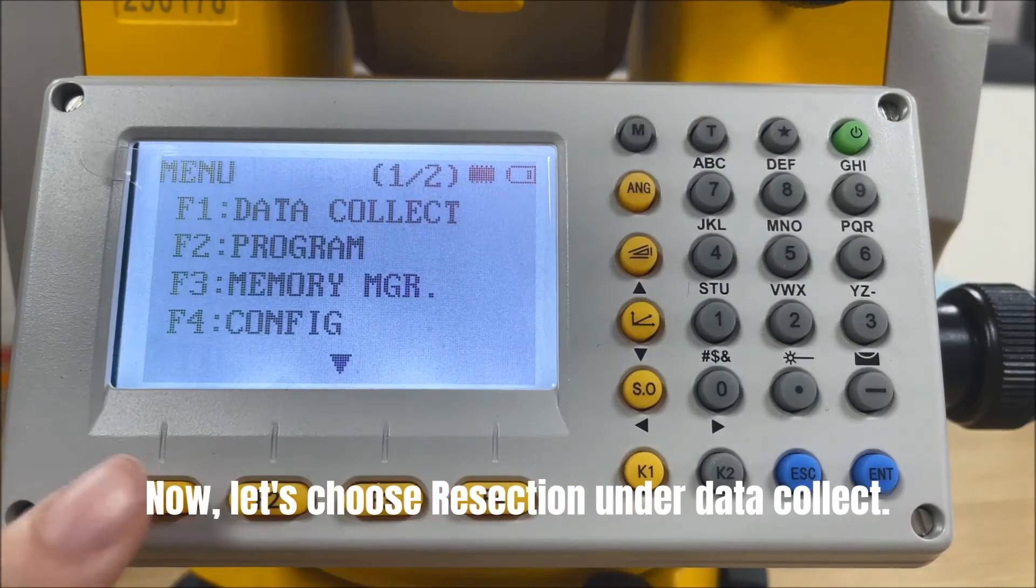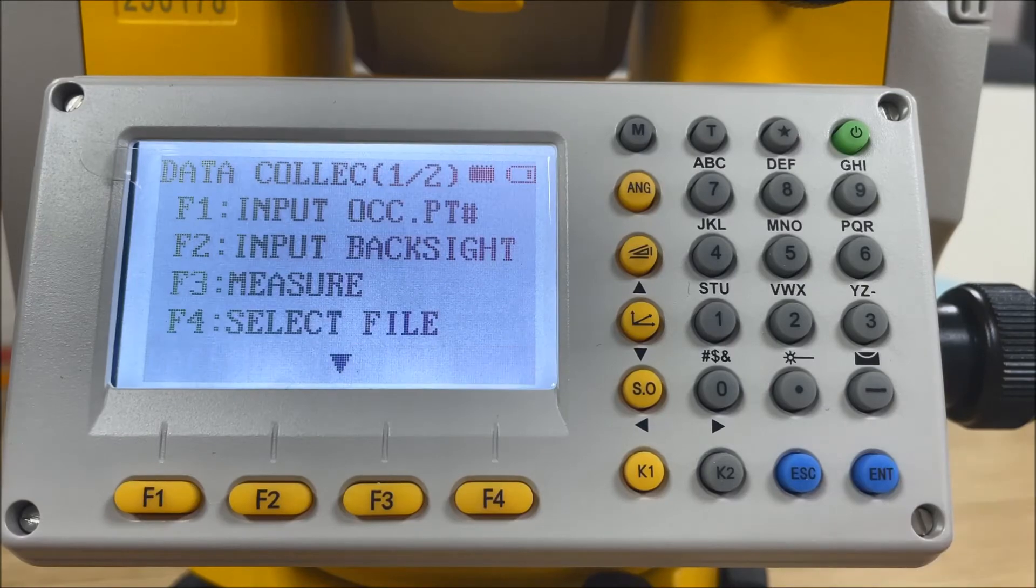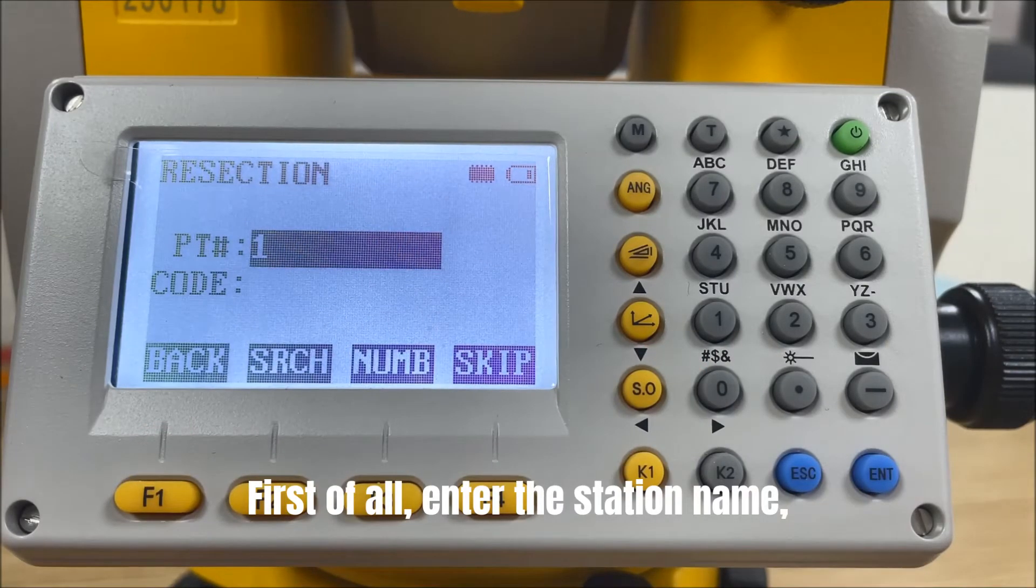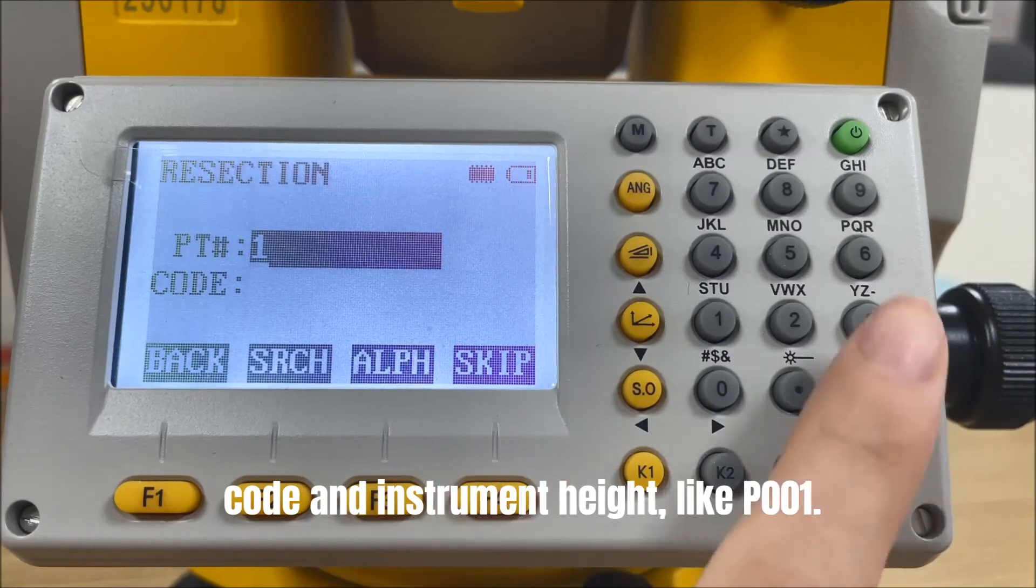Now, let's choose resection under data collect. First of all, enter the station name, code and instrument height, like PO1.